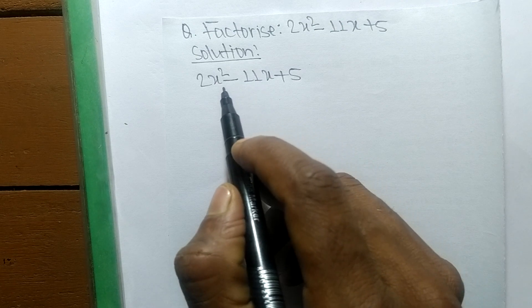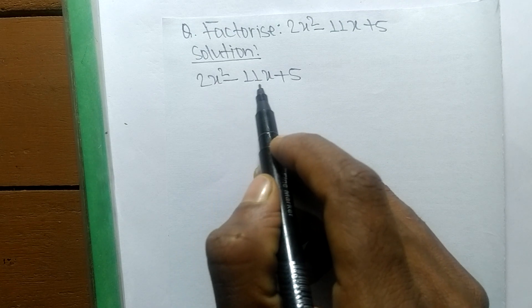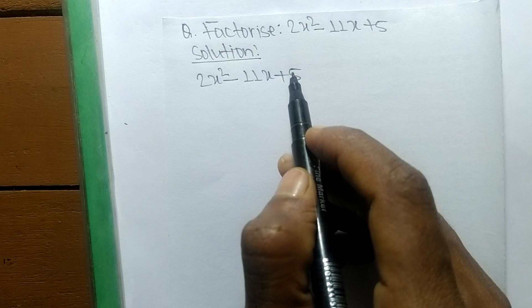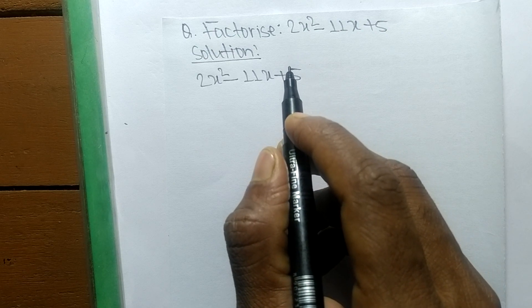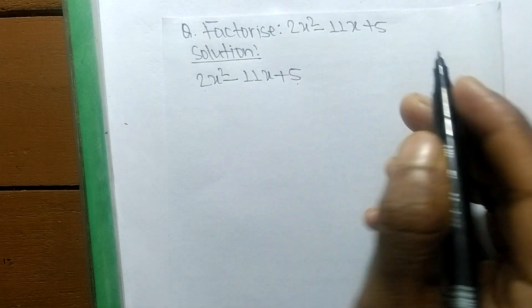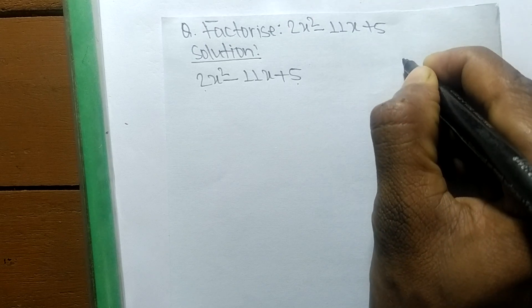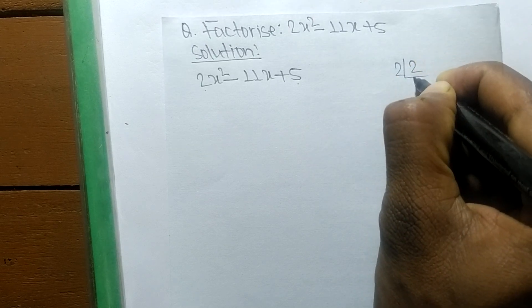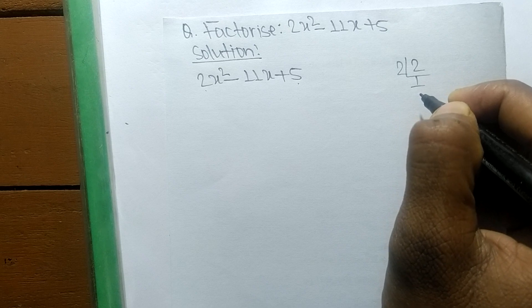For the solution of 2x² - 11x + 5, first we have to find out the prime factors of first and last number. So the prime factors of 2 is 2 times 1, which means 2.